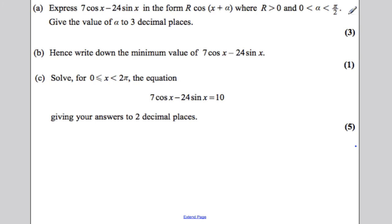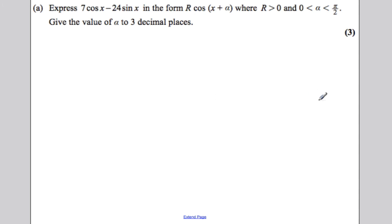This question is about the r cos theta plus alpha method and using that to find maximum and minimum and solve equations. Let's do part A. We are asked to express 7 cos x subtract 24 sin x in the form r cos x plus alpha, r bigger than 0, alpha between 0 and pi by 2. Give your value of alpha to 3 decimal places.